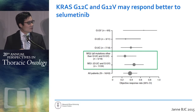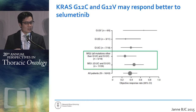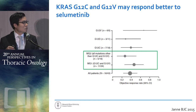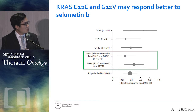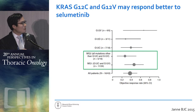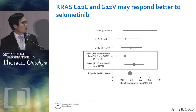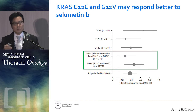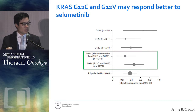Pacciani also published additional data from the selumetinib experience, looking at different KRAS mutations. The overall response rate was 37%, with a suggestion that G12V and G12C responded better — significantly different from other mutations — suggesting some difference in terms of the specific kind of KRAS mutation underlying response.